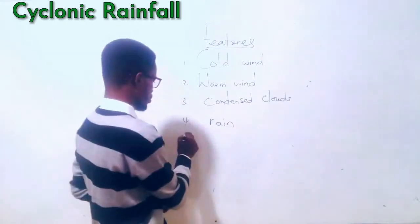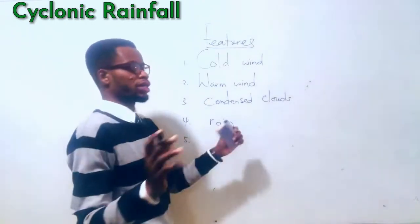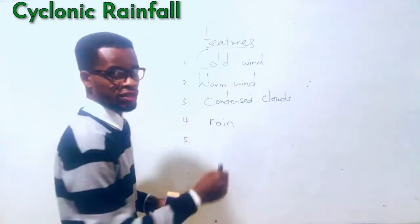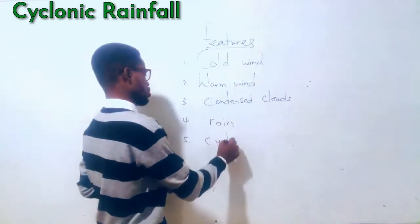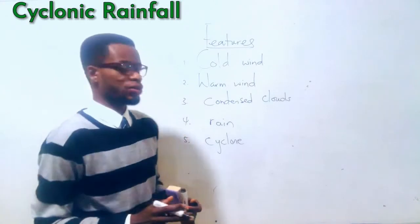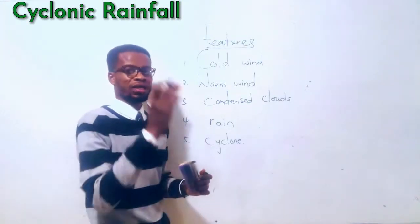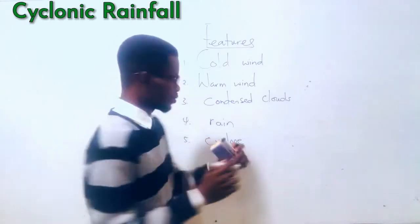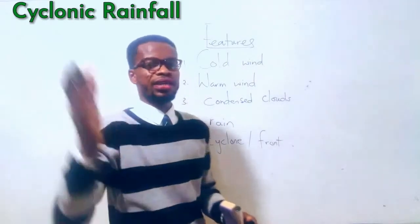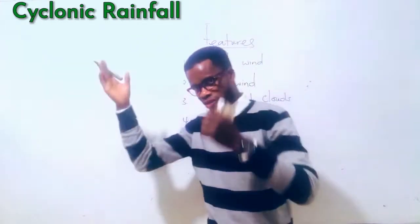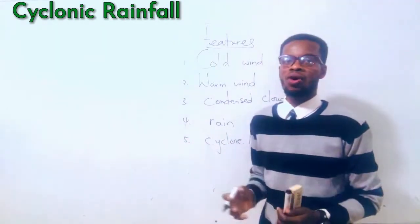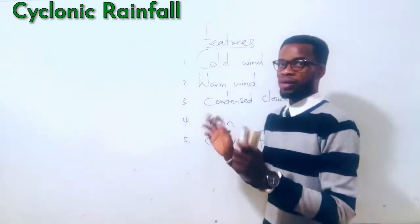Then you have rain as a feature. Now when cold wind and warm wind meet or clash, that meeting point is given a name — and that's what forms the name 'cyclonic.' That boundary or meeting point is referred to as a cyclone, or the front, where the warm wind fronts the cold wind. So it's known as a cyclone or the front.